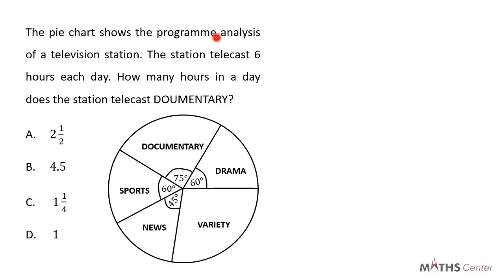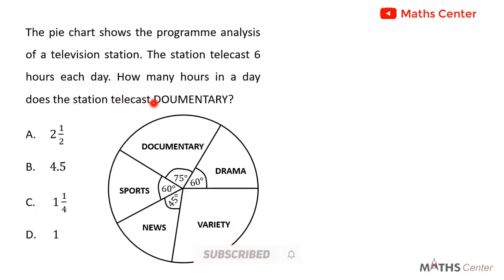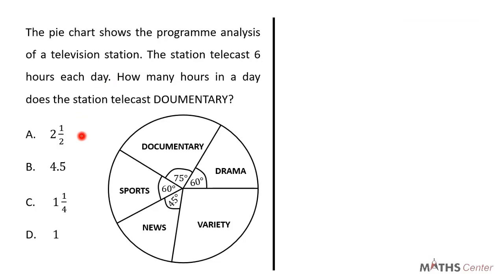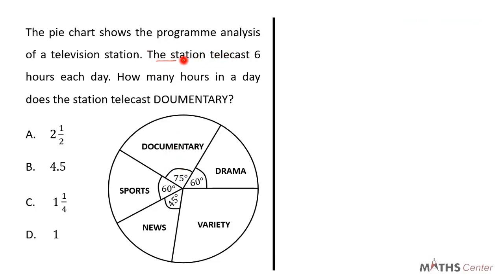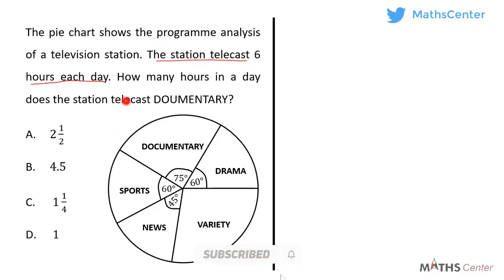The pie chart shows the program analysis of a television station. The station telecasts 6 hours each day. How many hours in a day does the station telecast documentary? This is a multiple choice question. We know that the total angles around a point is 360 degrees. The angle of the sector for documentary is 75 degrees. We will use this information to calculate the number of hours in a day that the station telecasts documentary.